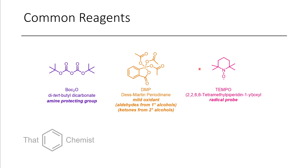Another reagent you see quite often is TEMPO, a persistent radical compound. If chemists are generating radical species in their methods, to prove the formation of a radical intermediate they will add TEMPO into their reaction, and the TEMPO will react with their radical to produce a probe product — so this is a radical probe. The reason it's stable is that big bulky groups prevent any reactivity adjacent to the nitrogen. Radical reactions are a topic we'll discuss at a later date.